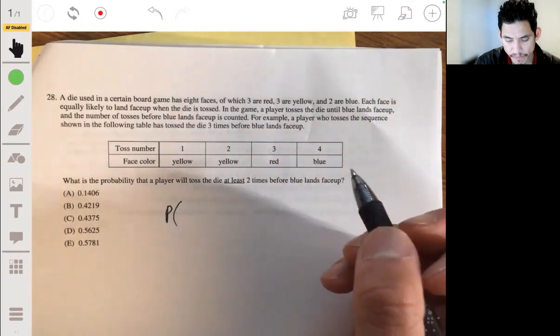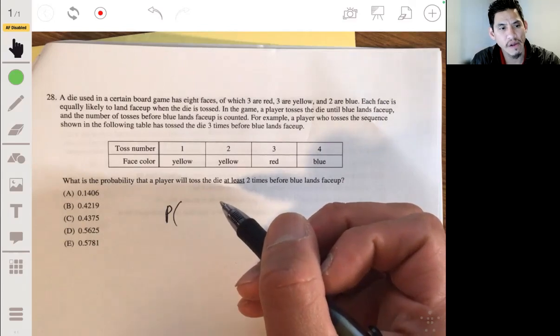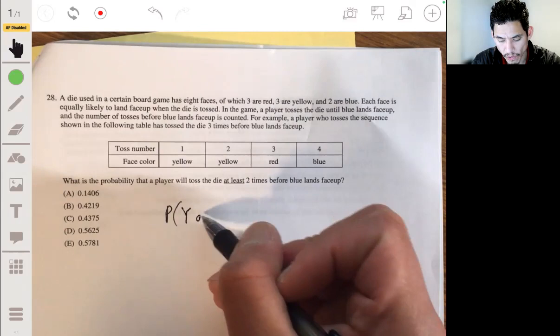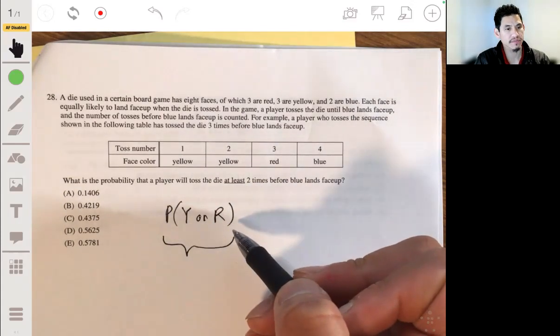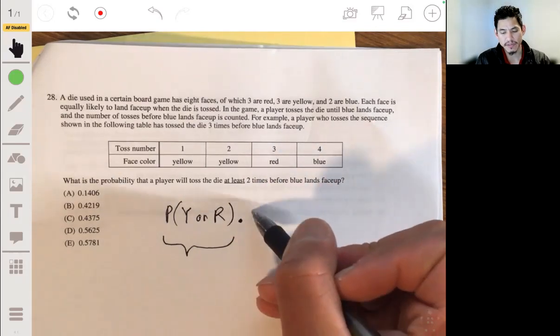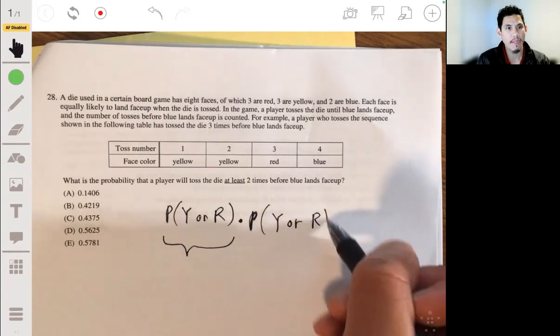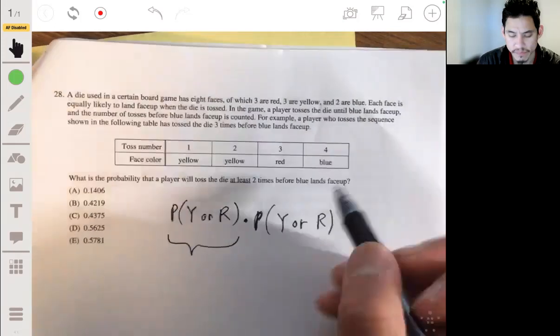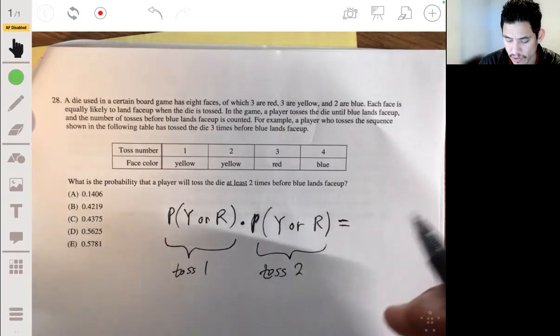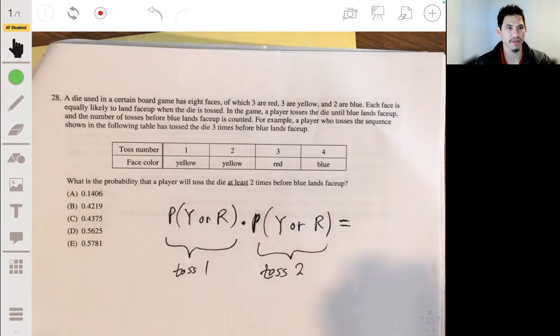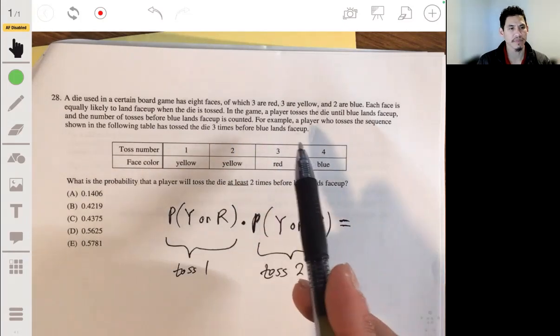We want to find the probability that you're going to have a color other than blue on your first toss, the probability of either getting a yellow or red. This is toss one. And if you need to get this two times, you're going to multiply this by again getting a yellow or a red. So you're going to multiply by the probability of getting a yellow or red. Because these are independent. Now it doesn't matter what you got on the first toss. This is toss one. This is toss two. So as long as you get yellow or red on both tosses in a row, you're still going to be going back.